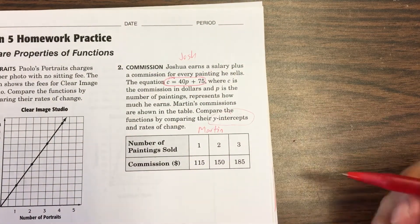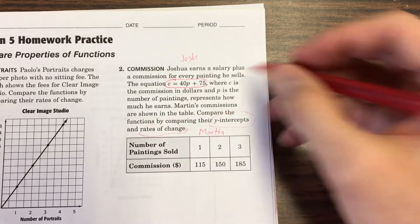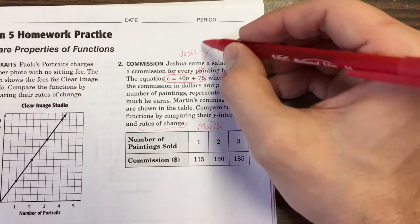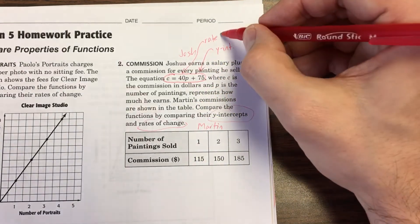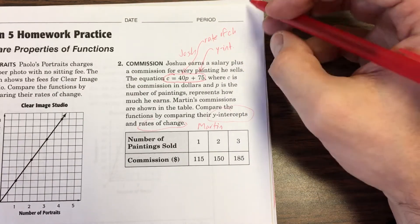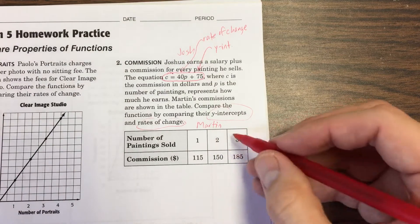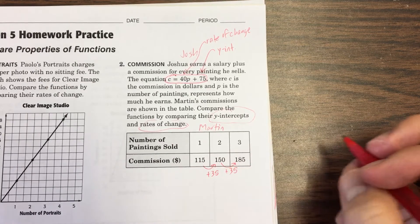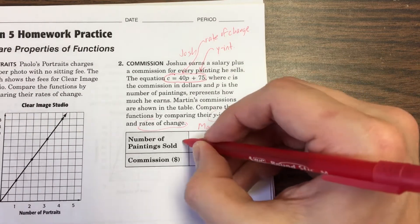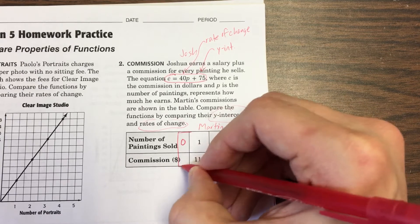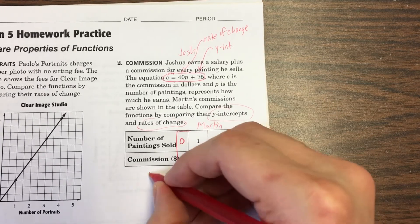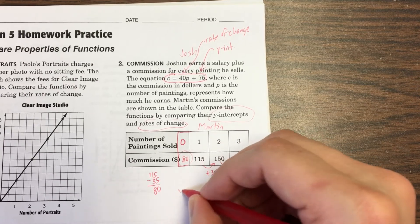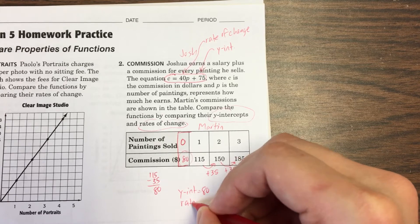Number two is actually a little bit tougher. It says here is Josh's salary. His equation is a little bit different. And then Martin's is right down here. This is Martin. And this is Josh right there. It says compare the Y-intercepts. The Y-intercepts and the rate of change. This is the Y-intercept right here. Josh's Y-intercept is 75. So he already has $75 before he starts. And then his rate of change is right here. He makes $40 per painting, but then he already has $75 for his commission, I guess. And then this person, you can see it's counting up by $35. So this Martin makes $35 for each painting. But the Y-intercept, you can't really see. The Y-intercept is always going to be with zero, and you don't have zero. So just count backwards. What's 115 minus 35?